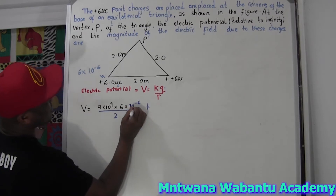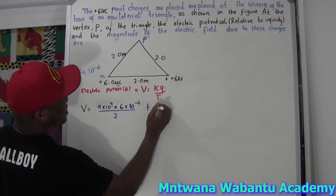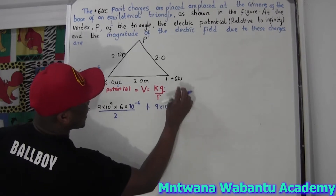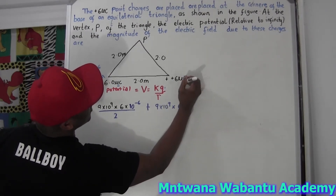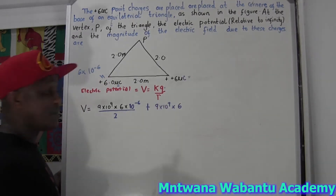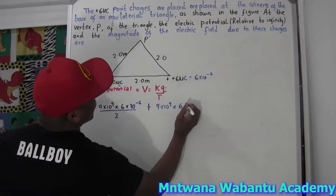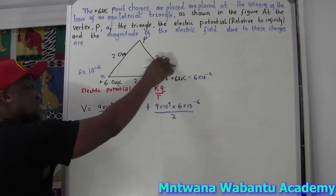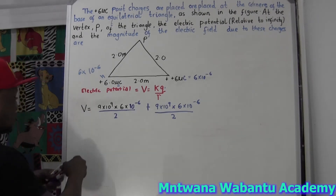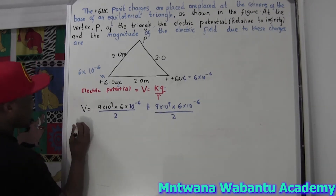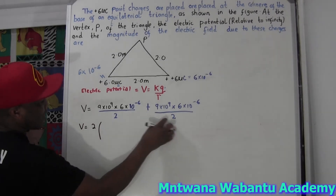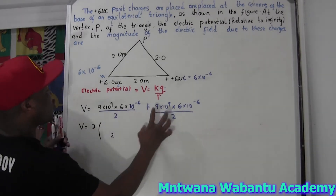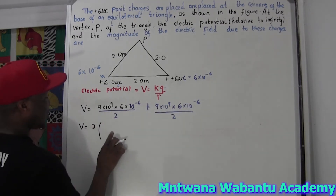Now we must add the contribution from P to the second charge. k equals 9×10⁹, Q is 6 — also in microcoulombs, so 6×10⁻⁶ coulombs — and the distance r₂ is also 2. Since everything is the same, we can factor out: it's just 2 times everything, with a common denominator of 2.